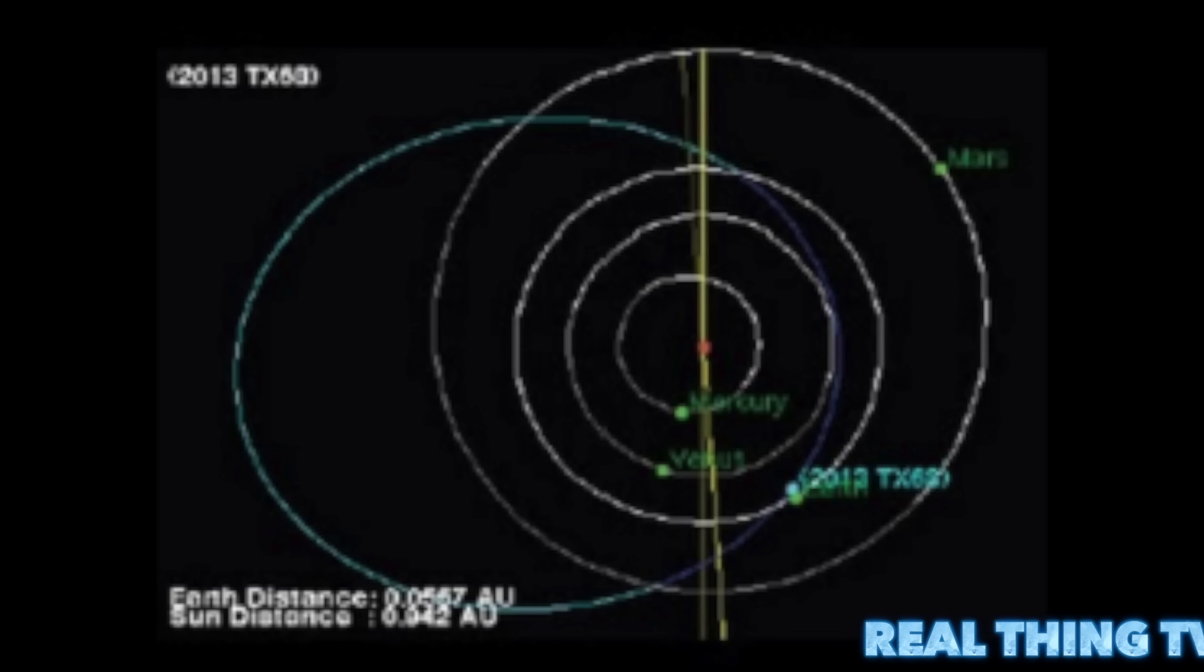The asteroid was discovered by the NASA-funded Catalina Sky Survey on October 6, 2013, as it approached Earth on the nighttime side. After three days of tracking, the asteroid passed into the daytime sky and could no longer be seen.